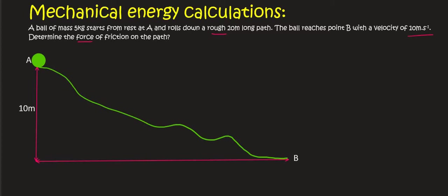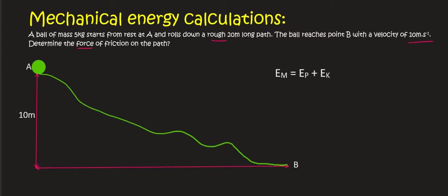We need to determine the force of friction. Alright, so what we need to do is we need to know the mechanical energy of the object at A. So we know that mechanical energy equals the following. Now at point A the object is at rest and so it doesn't have kinetic energy, it only has potential energy.